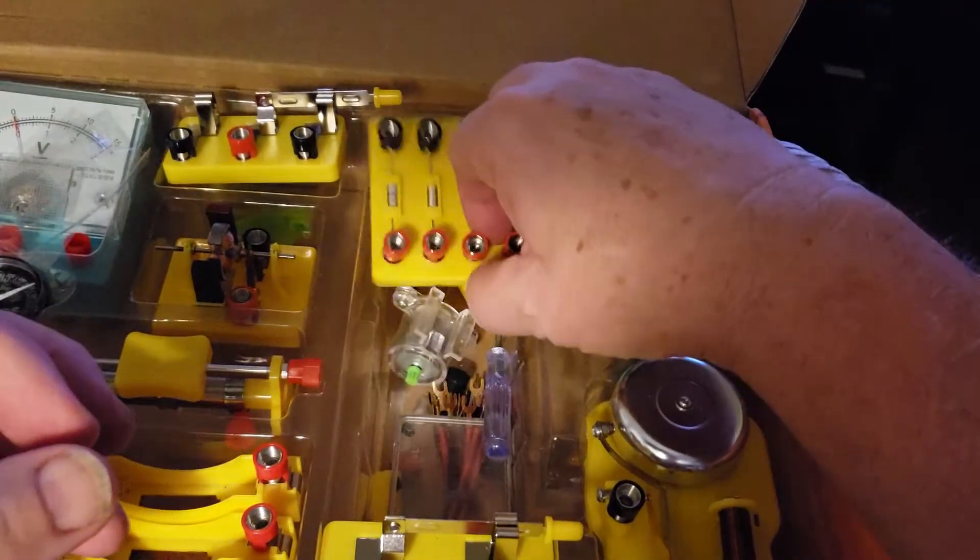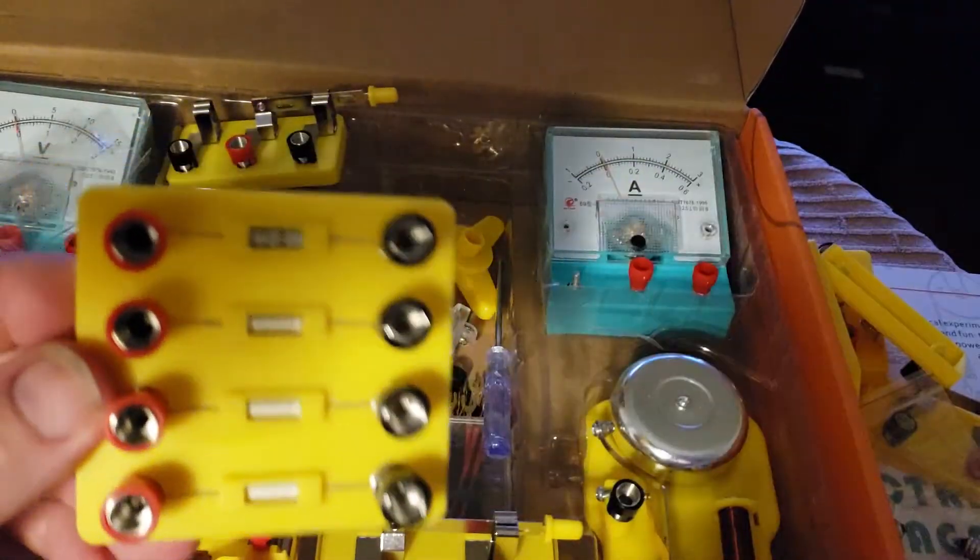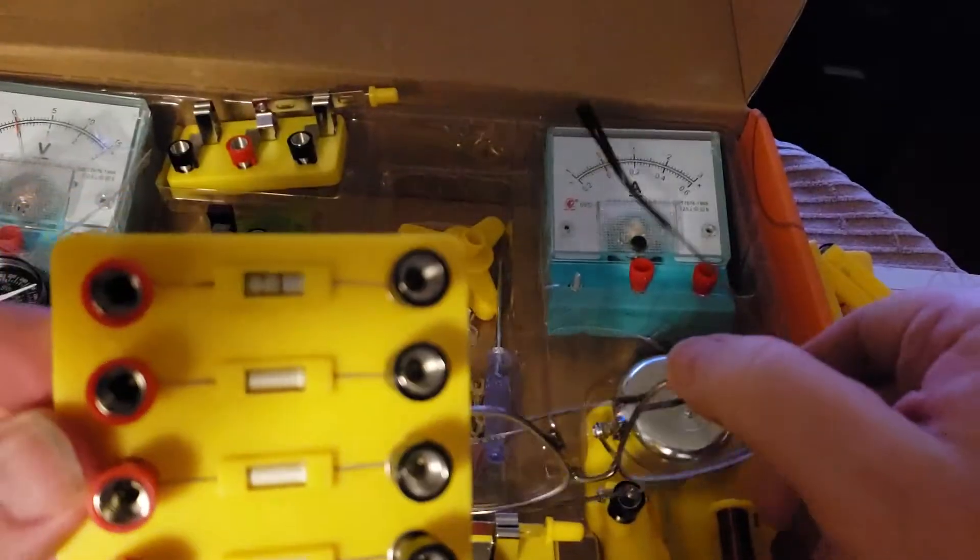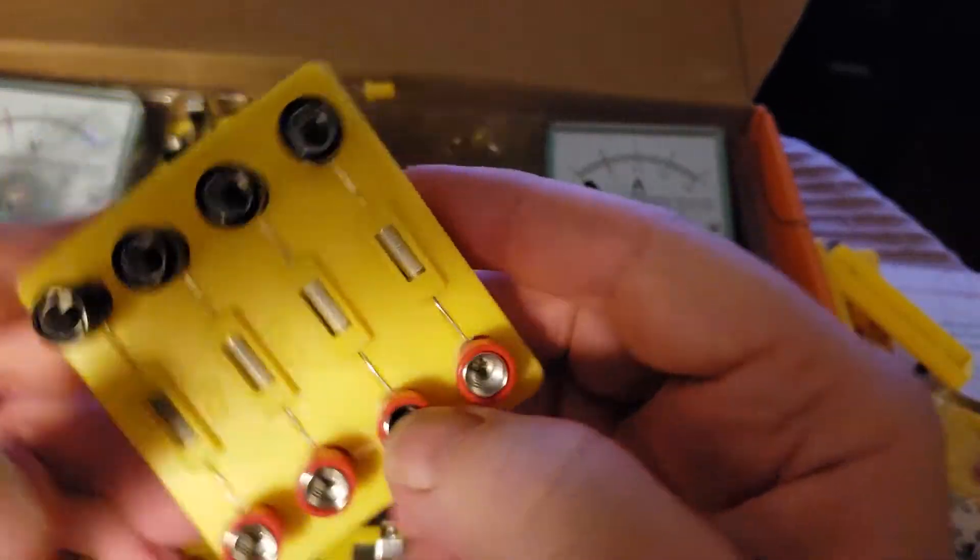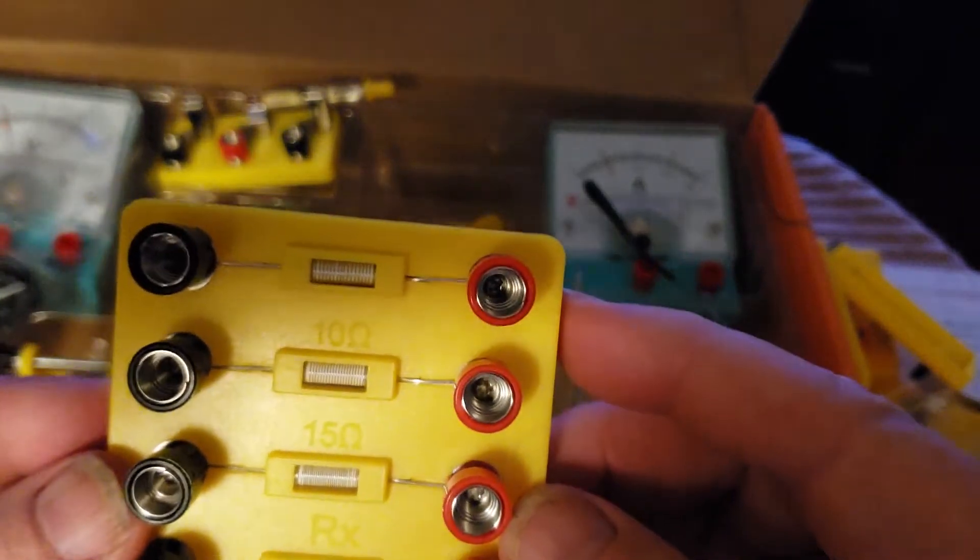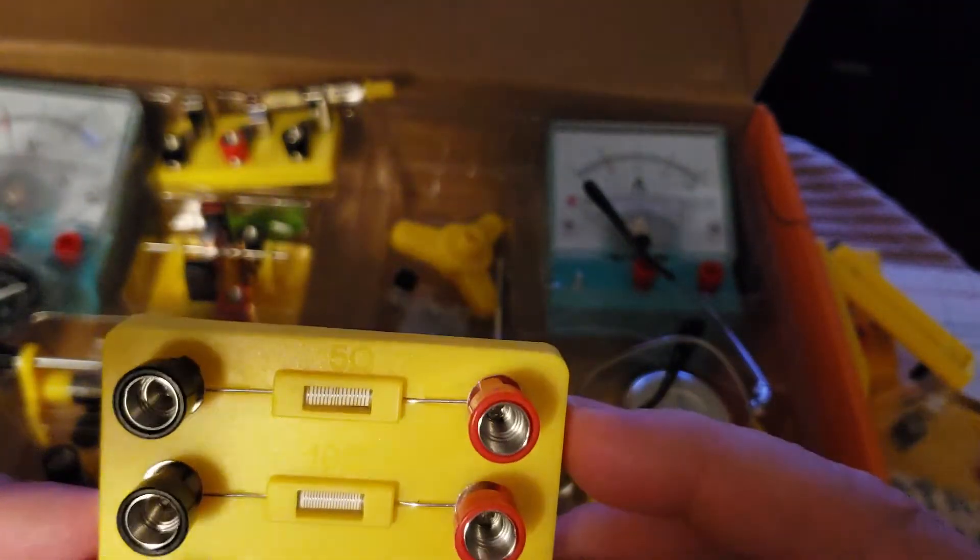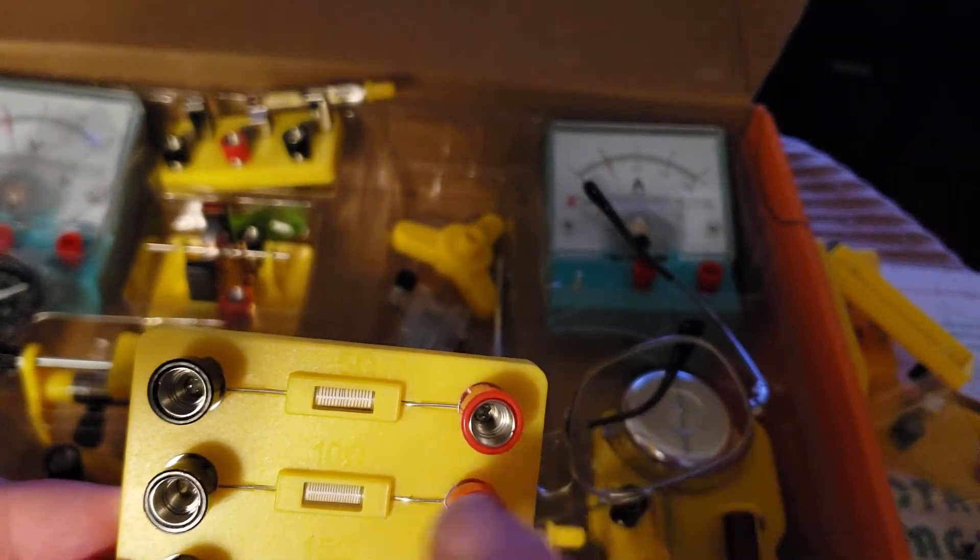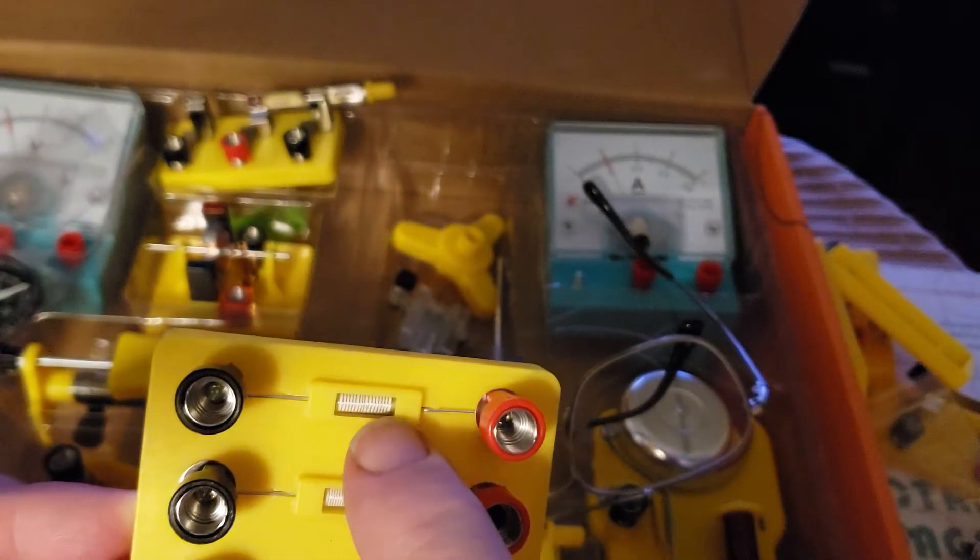This is interesting, a resistor bank. I noticed they're wire wound resistors so they're not coated. You can see the 5 ohm, you can actually count the number of windings. The 10 ohm has twice the number of windings.